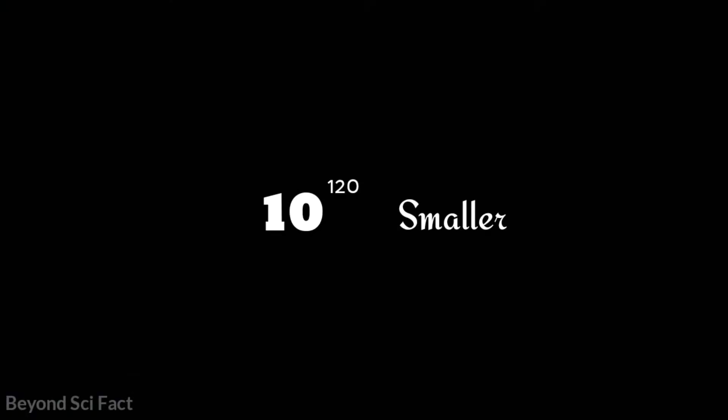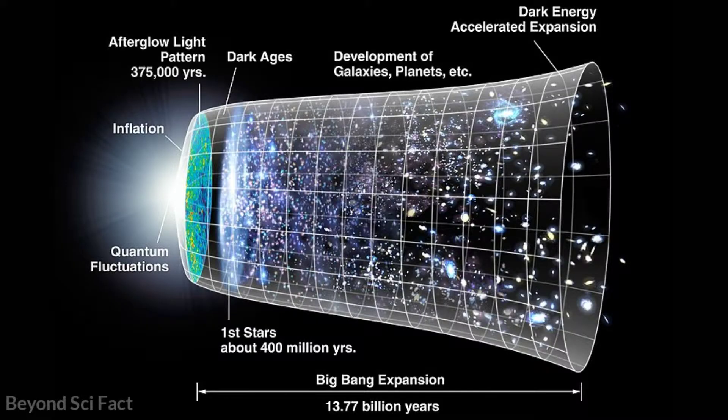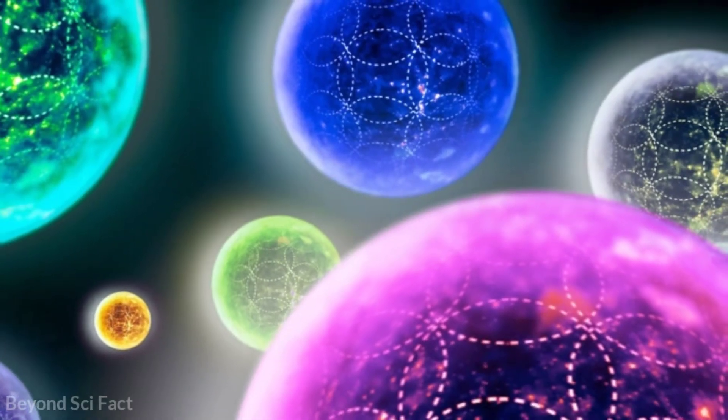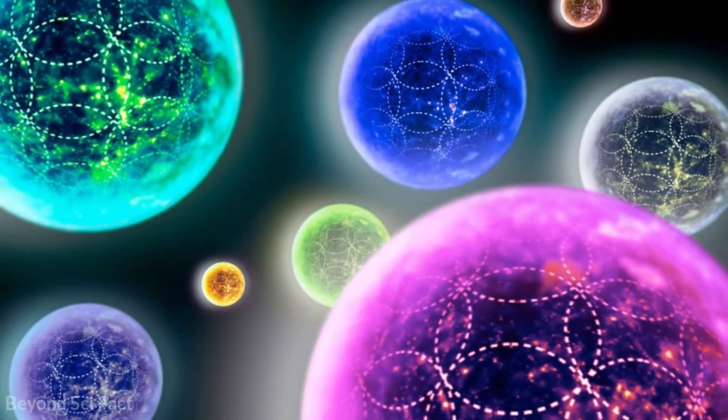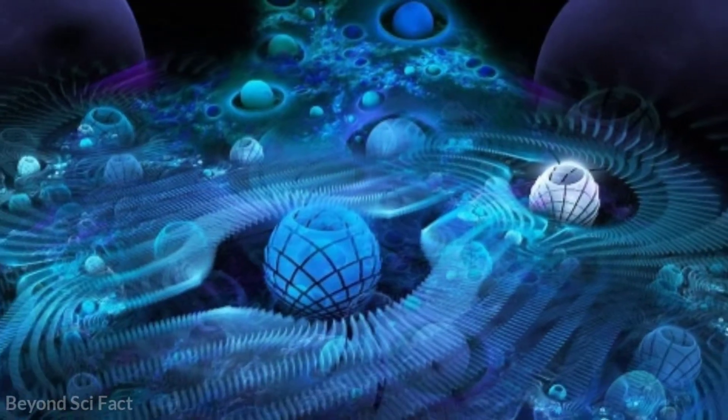As I told you, the cosmological constant is 10 to the power 120 times smaller than what it should be. So the theory of nature should have at least 10 to the power 120 different values of the cosmological constant. But each universe has only one value of the cosmological constant. So it proves that there are many more universes other than our universe.